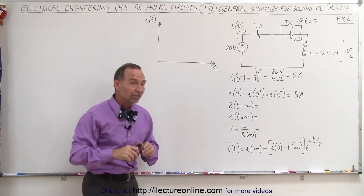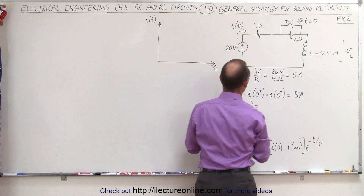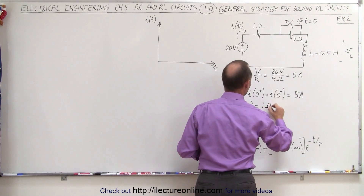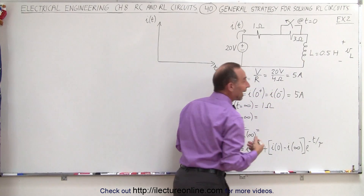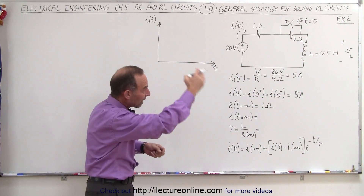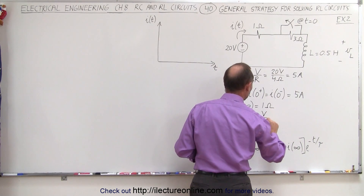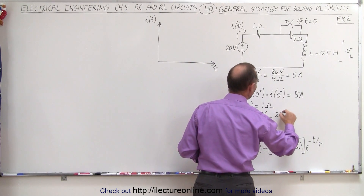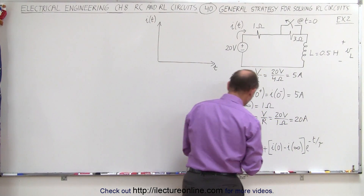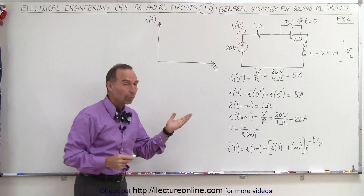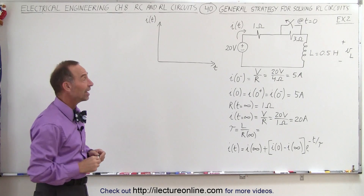Now the resistance when time has elapsed after the switch opens will just be the 1 ohm resistor in the circuit. The current after steady state is reached — when the inductor no longer has a role — is V divided by the new resistance: 20 volts divided by 1 ohm, giving 20 amps. So after the switch opens, the current changes from 5 amps to 20 amps, though of course it doesn't do that instantaneously.